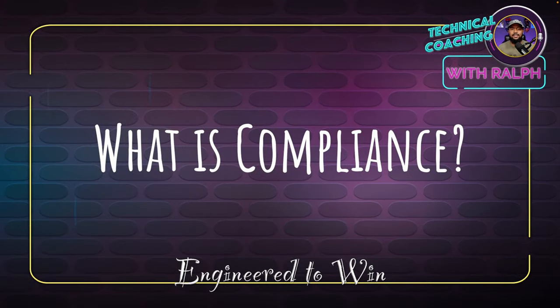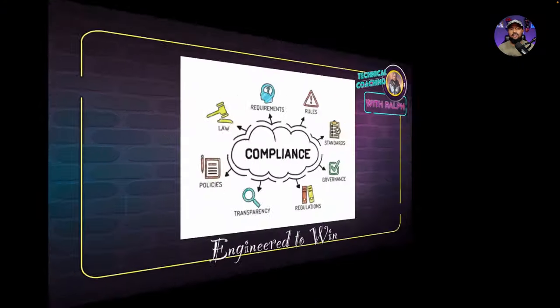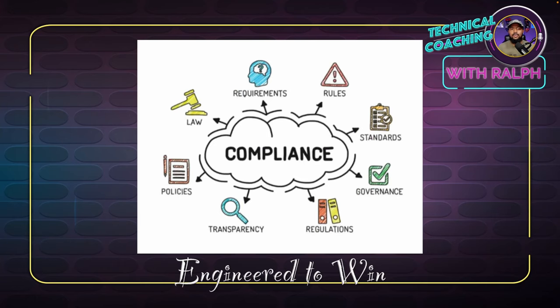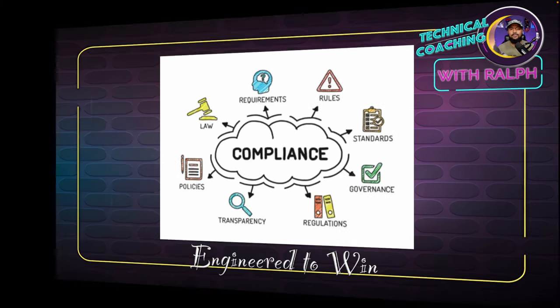So what exactly is compliance? Let's take a quick look at this diagram. All the things that come from compliance: requirements, rules, standards, governance, regulations, transparency, policies, and law. So many different aspects of compliance that we're going to be looking into.